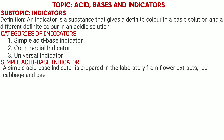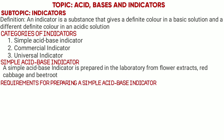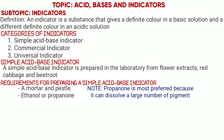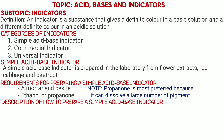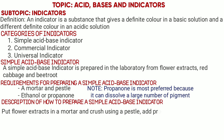The procedure for preparing a Simple Acid-Base Indicator: first you need a mortar and pestle, then you need a suitable solvent such as ethanol and propanol. The most commonly used solvent is propanol because it dissolves a large number of pigments. Put the flower extract in a mortar and crush using a pestle, add propanol and continue crushing until a deep color solution is obtained.